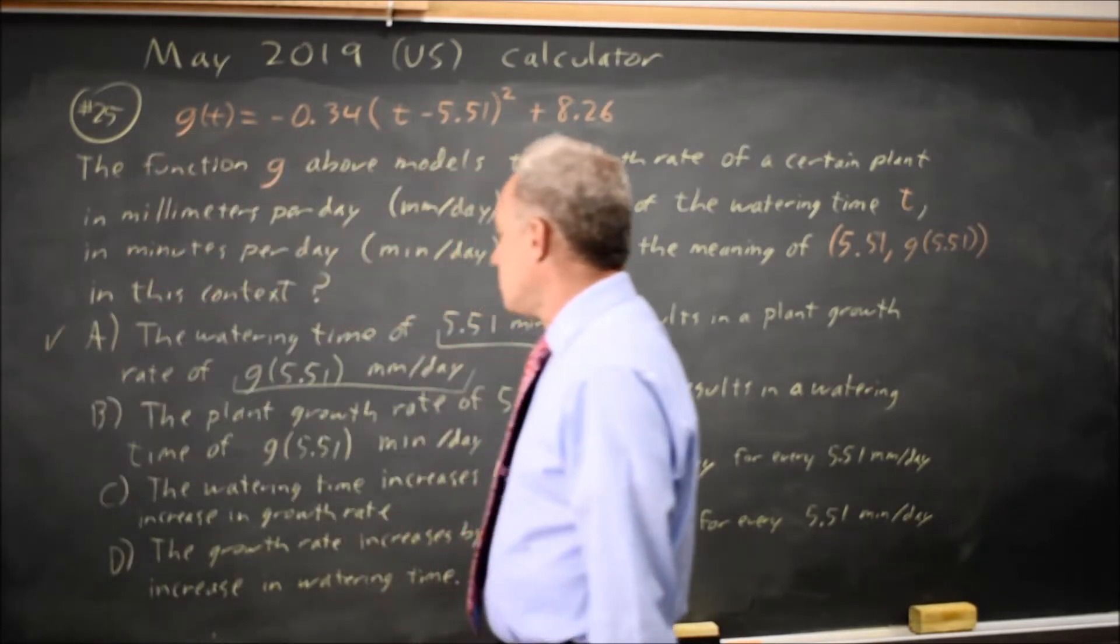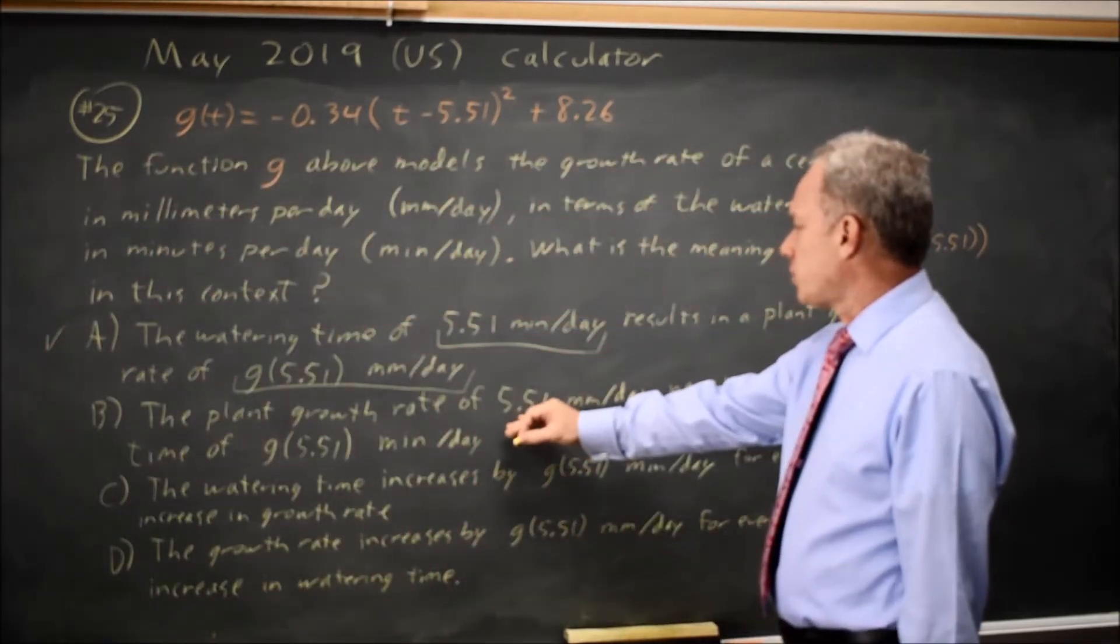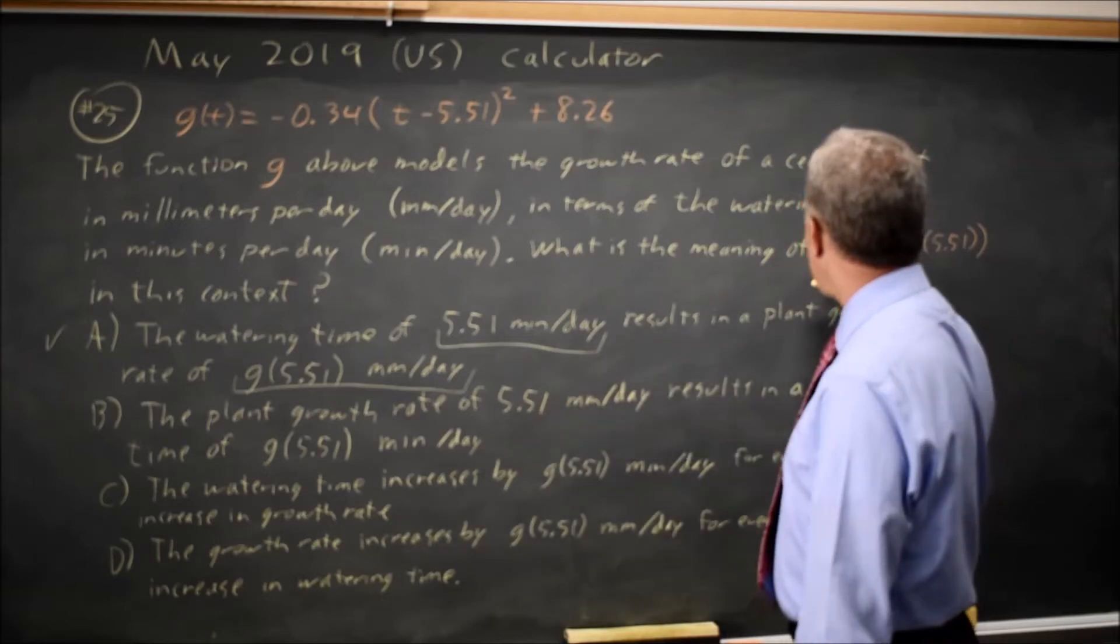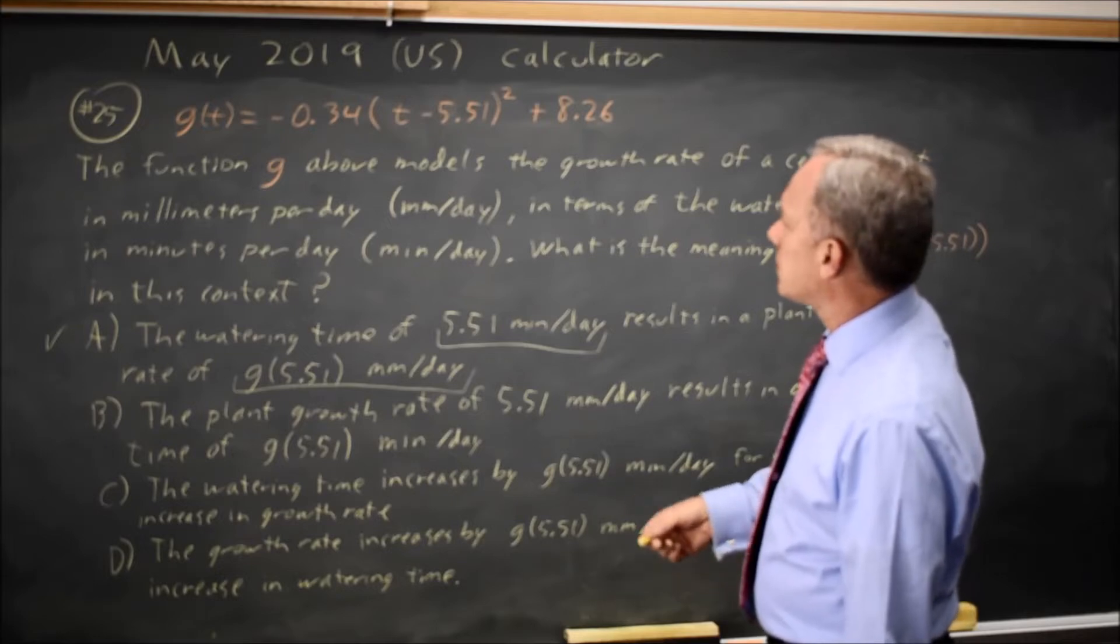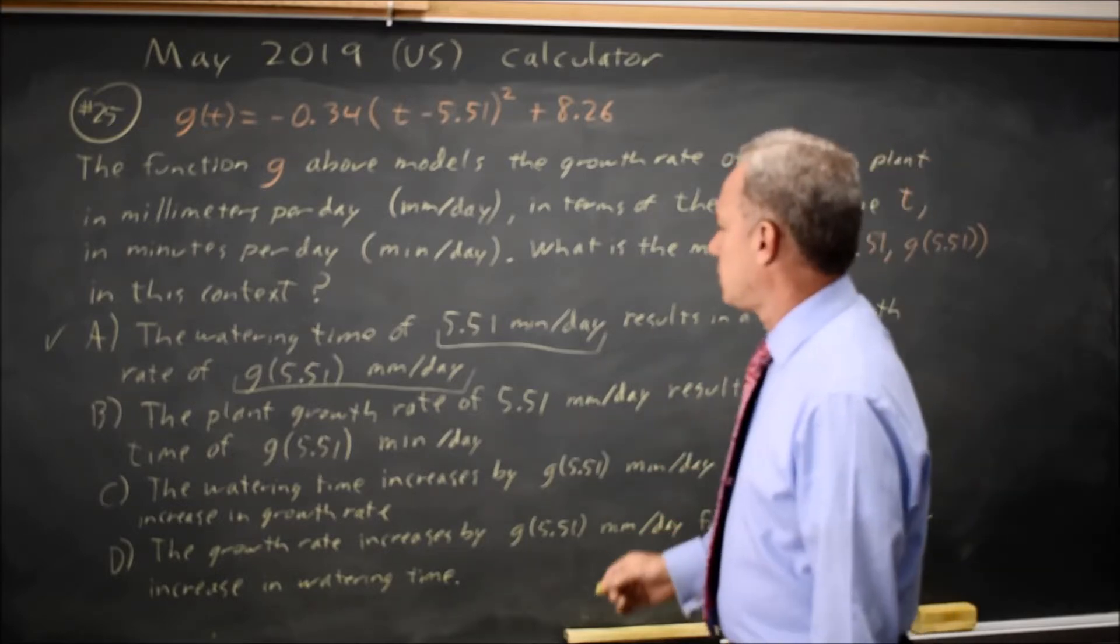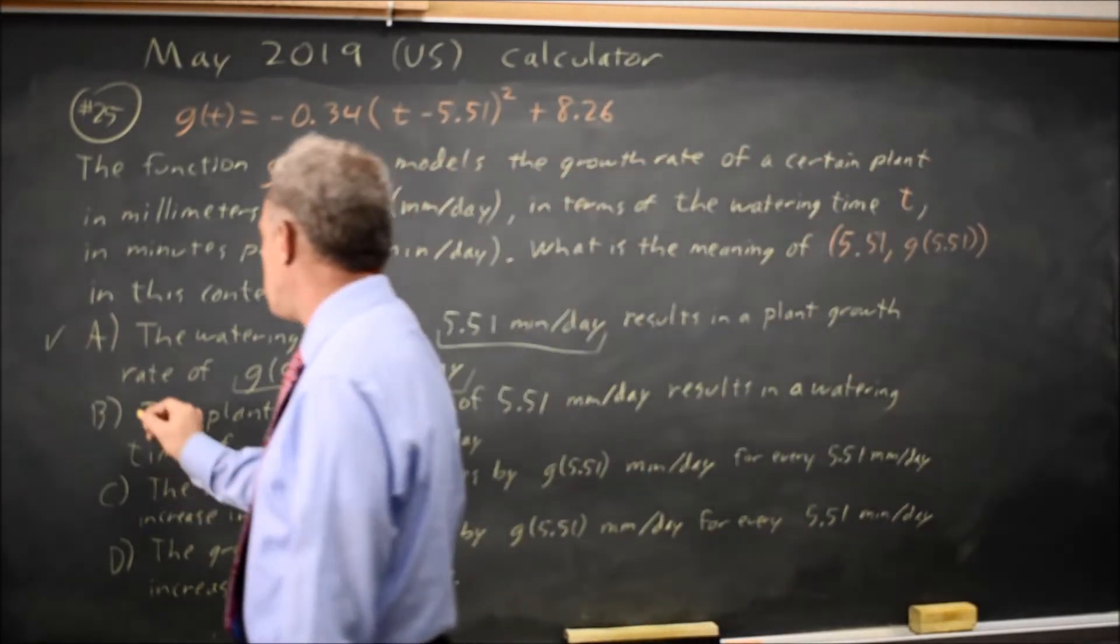Let's check the others. Choice B says the growth rate is 5.51, but the t value is 5.51, and that is the watering time in minutes per day, not the growth rate. So B is wrong.